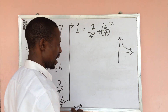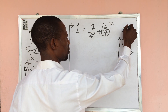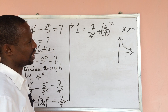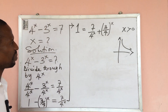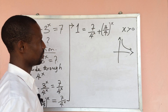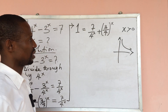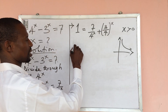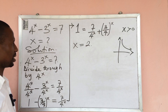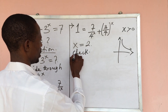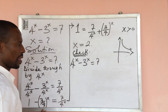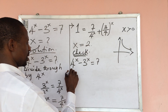Let's try the trial and error method. From this function, x must be greater than zero. So if x is greater than zero, let's try our trial and error method. The only value that will satisfy this equation is x equals 2. Let's check: if x equals 2, does it satisfy the equation? Our equation is 4 to the power of x minus 3 to the power of x equals 7, and we're testing x equals 2.